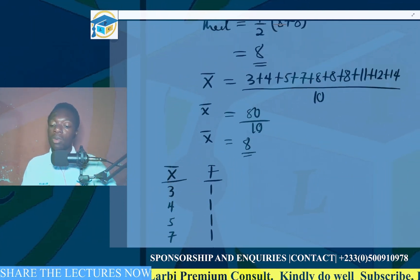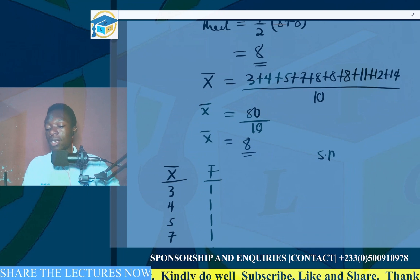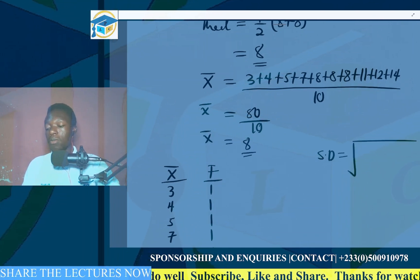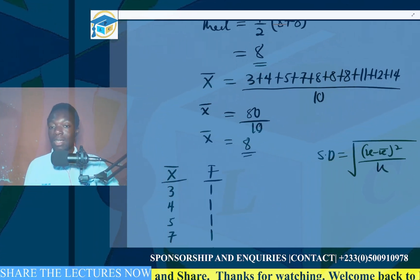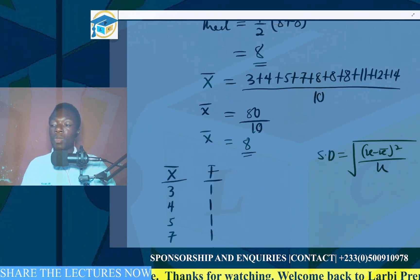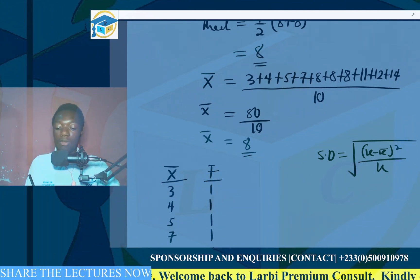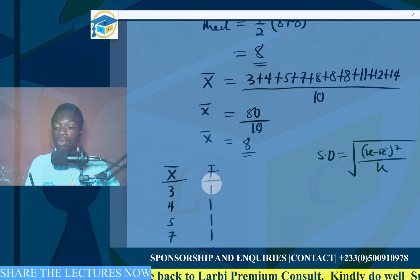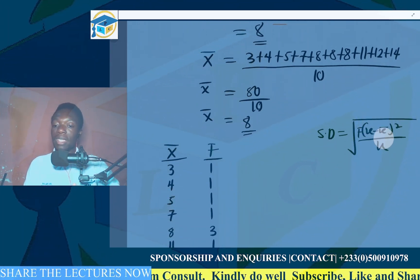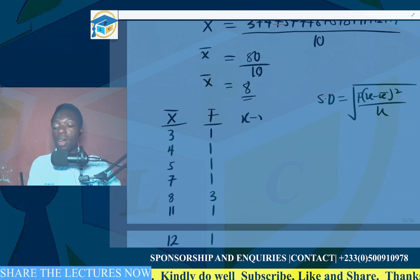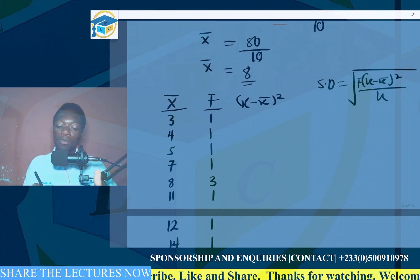For ungrouped data, the standard deviation equals the square root of the sum of (x minus x-bar) squared, divided by n. Since we are not told whether this is a sample or population, we use the population approach. We also multiply by frequency f, so we need a column for (x minus x-bar) squared.